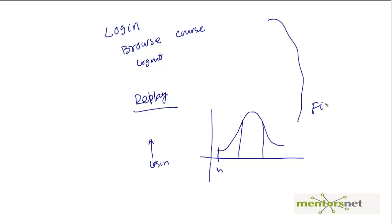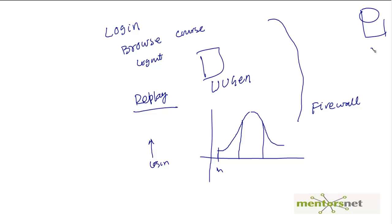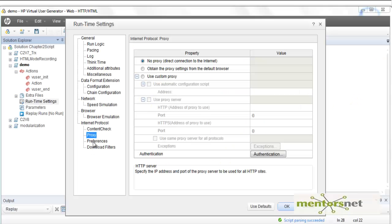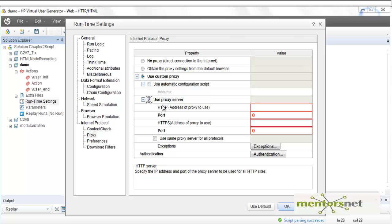If you are behind a corporate firewall, VUgen needs to go through a proxy server to reach the outside network. In that scenario, you have to provide the proxy server address so that VUgen forwards requests to the proxy server, which then retrieves the responses back to VUgen.